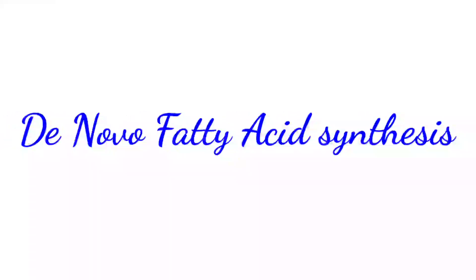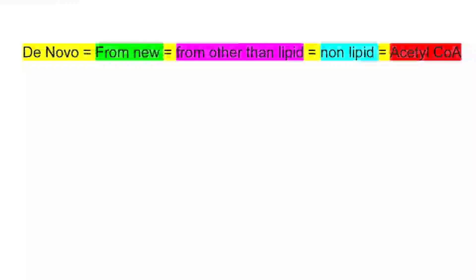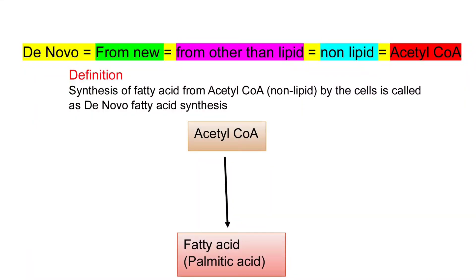De novo synthesis of fatty acids. Here, de novo means 'from new,' that is, from other than lipids. So it uses a non-lipid precursor — synthesis of fatty acids from acetyl-CoA, which is a non-lipid source.